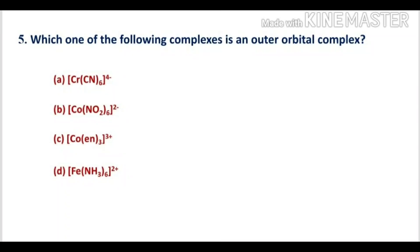Question number 5: Which one of the following complexes is an outer orbital complex? Outer orbital complexes are formed by SP3D2 hybridization, whereas D2SP3 gives inner orbital complexes. SP3D2 hybridization occurs only when 3d orbitals are not available, so 4S, 4P, and 4D orbitals take part instead.